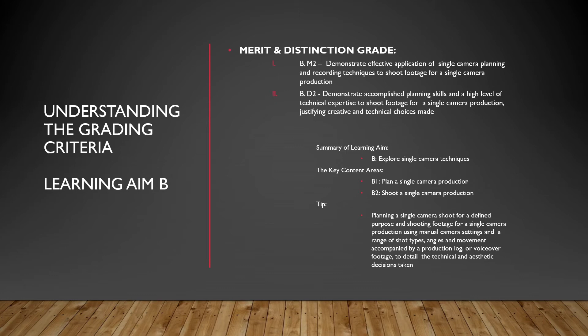The summary here is that you are exploring single camera techniques to accomplish this. The key areas are: B1 — plan a single camera production, which is based upon all of your pre-production techniques used to create this movie — and B2 — shoot a single camera production. The tip is to plan a single camera production shoot for a defined purpose, shooting footage across a range of shot types, angles and movement. You must accompany this with a production log. That production log needs to be detailed — think about the decisions you've made, how you've accomplished them, and why you've changed any of them.